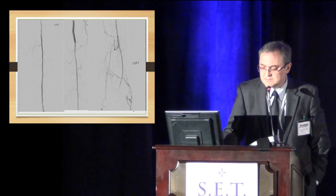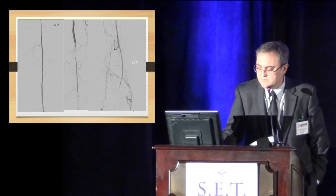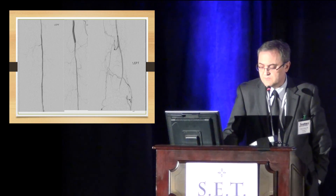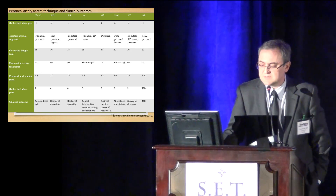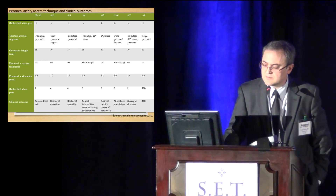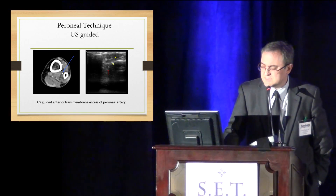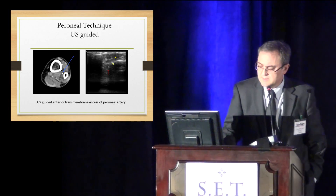This is another classic case: SFA is occluded, popliteal artery is occluded, and the only vessel is the peroneal artery. Same technique — my colleague likes to use fluoro guidance, and I get the peroneal access using ultrasound. Standard technique using an Outback device, the flossing, then stenting. This is the peroneal access; so far we did 10 cases, presented at SIR last year, and it won a distinguished abstract. One of my fellows presented it, and his practice changed after presenting this case.